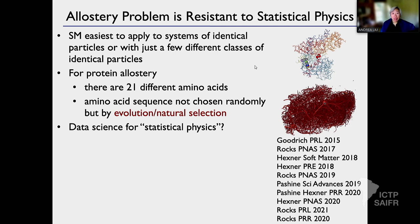This is hard for statistical physics to handle. Why? Because we can handle either identical particles, or a few different classes of particles, or totally random assortments — but here we have 20 amino acids in proteins, and the amino acid sequence is not random at all: it's designed by evolution in order for the protein to have this allostery function.